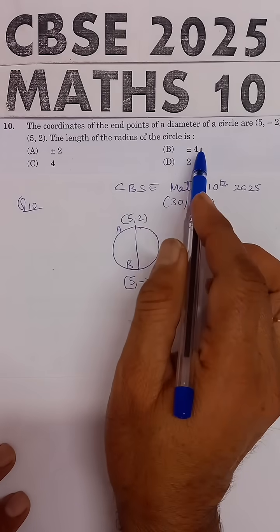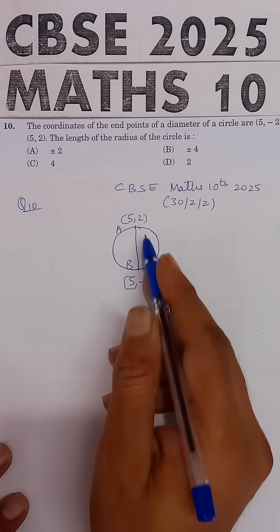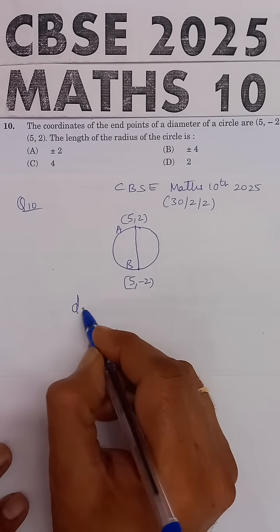We need to find the length of the radius of the circle. For this, the concept we will use is the distance formula. We will be using the distance formula.